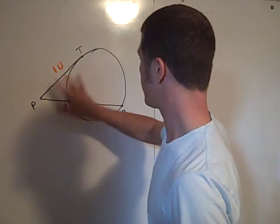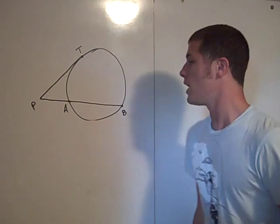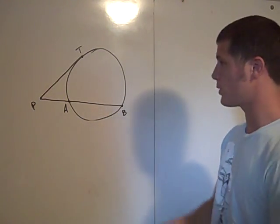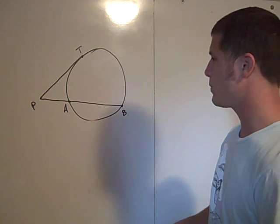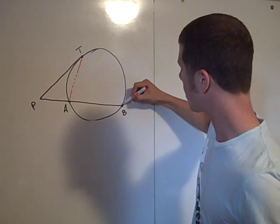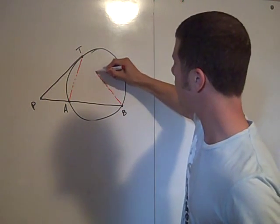And again, we have to draw in some auxiliary lines to find those two similar triangles. So in this case, the auxiliary lines we need to consider are AT and BT.